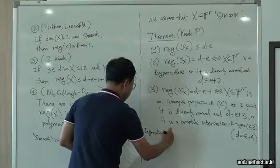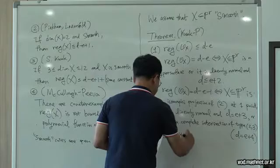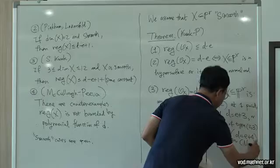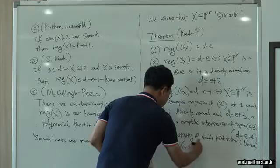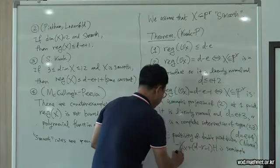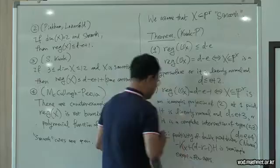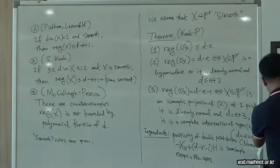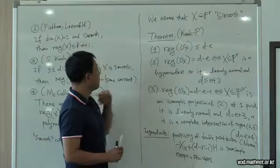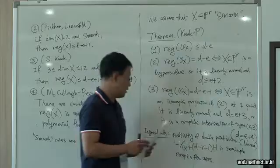The main ingredient of this theorem is the positivity of the double point divisor due to Sommese. He showed that this type of divisor is semi-ample except in a few cases. Using the Kodaira vanishing theorem, we can prove the sharp regularity for the structure sheaf except in those few cases.